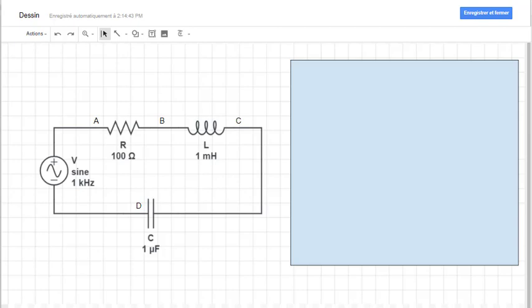Alright, so here we have an RLC circuit. Now let's say that we wanted to find the voltages across each of these nodes, labeled A, B, C, and D.